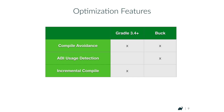Incremental compile is a significant superset of ABI usage detection. If you've used the experimental incremental compile before Gradle 3.4, give it another shot — it is no longer experimental and has massively improved in terms of reliability and efficiency. With all the data we extract for the incremental analysis, it would be very easy for Gradle to extract ABI usage detection as a separate feature, and in fact we plan to do so.